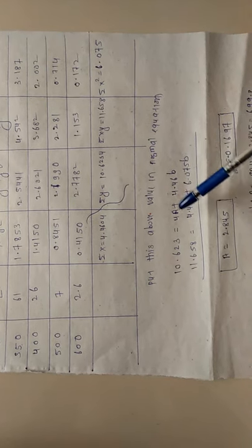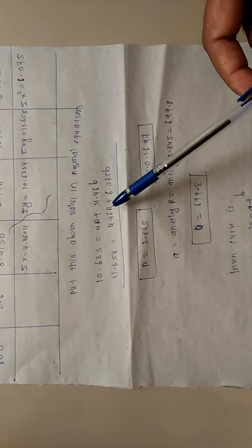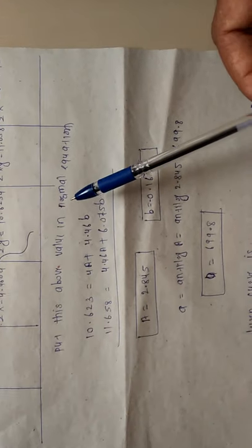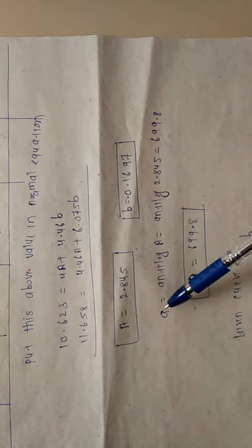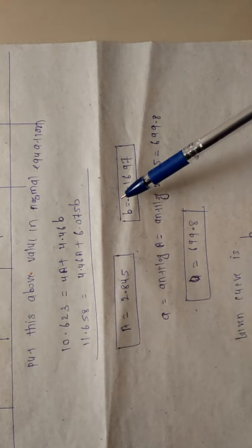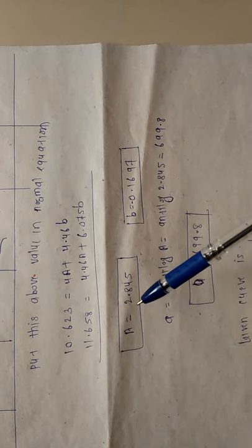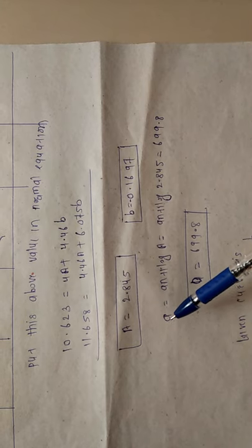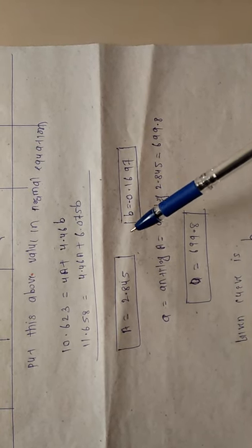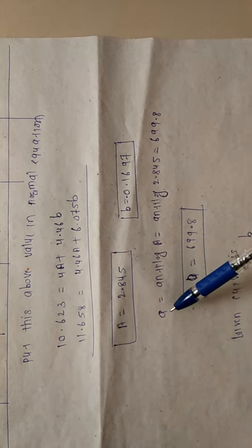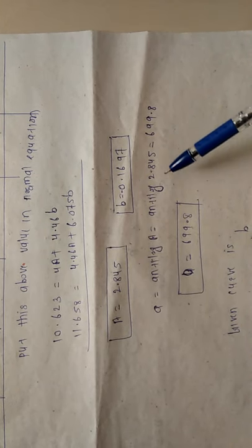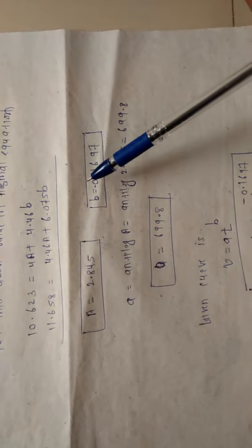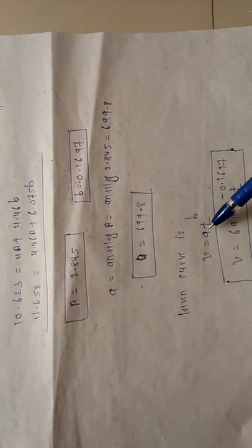Put all these values into the previous normal equations, that is equation number 3. You will get two equations. Solving these two equations gives the value of the constant capital A and the value of B. Our main target is to find the value of small b and small a. Small b equals B directly. For small a, since capital A equals log of small a, we take the antilog: small a equals antilog of capital A. The value of capital A is 2.845, so this gives the value of small a.